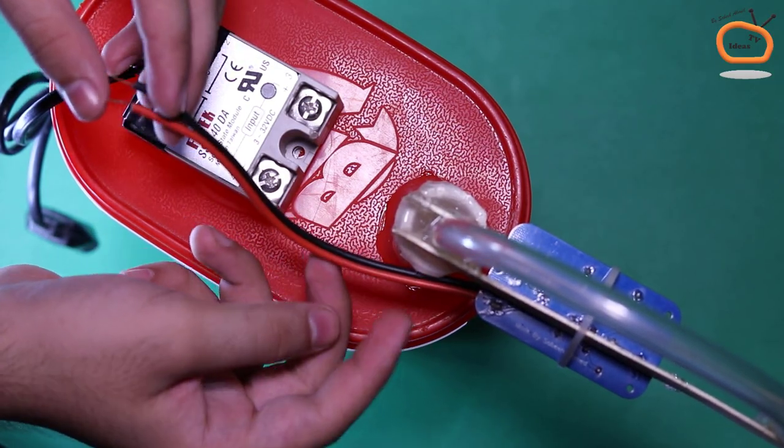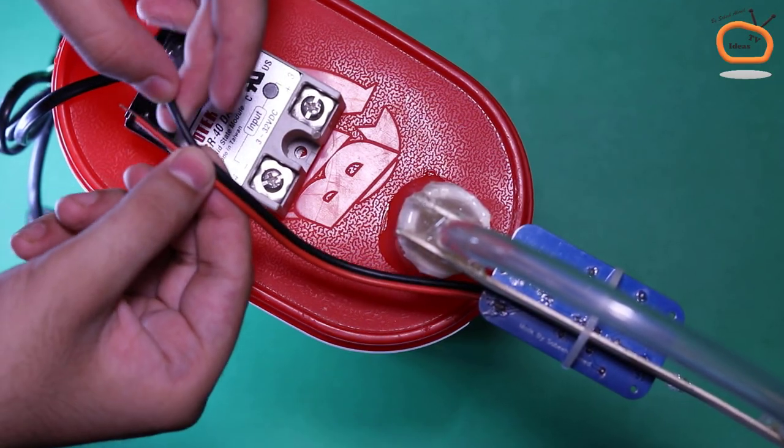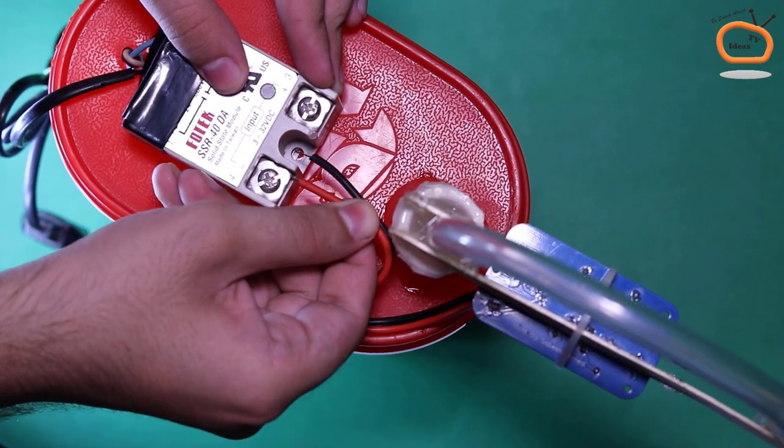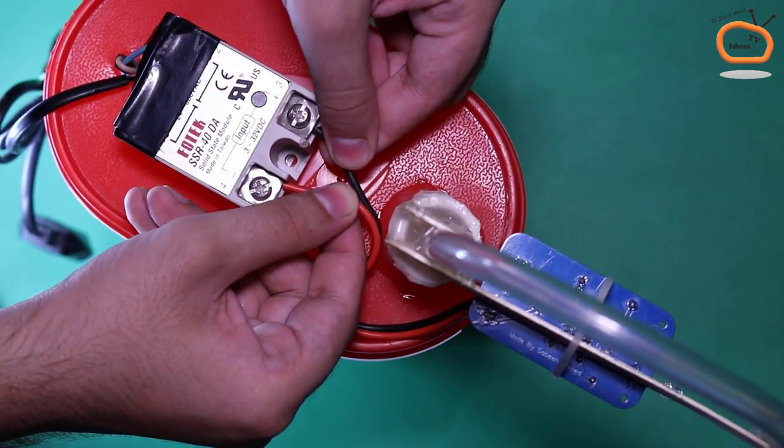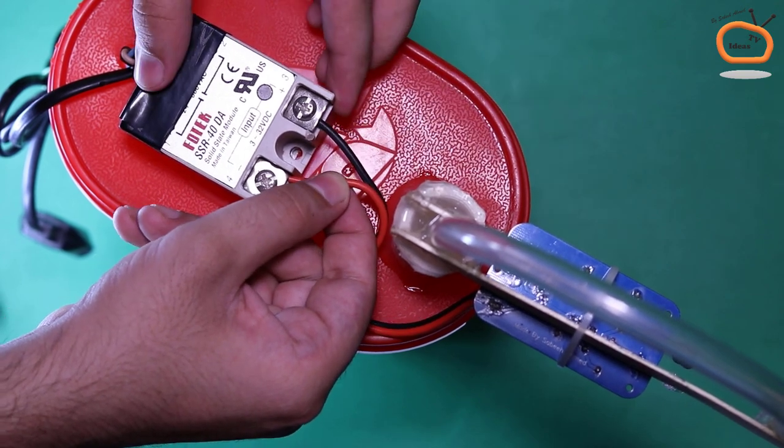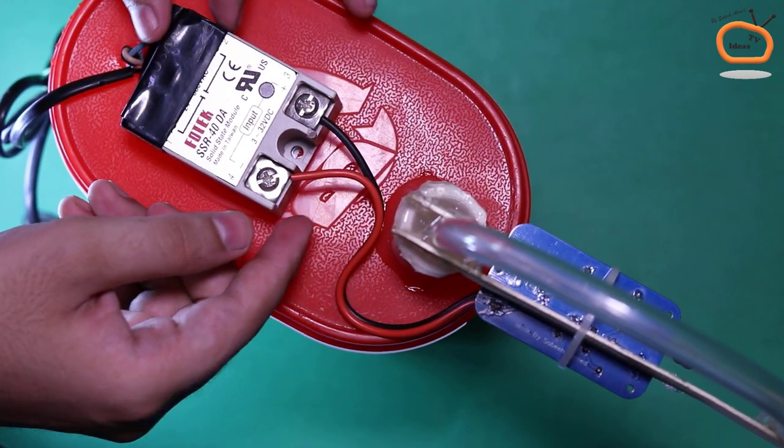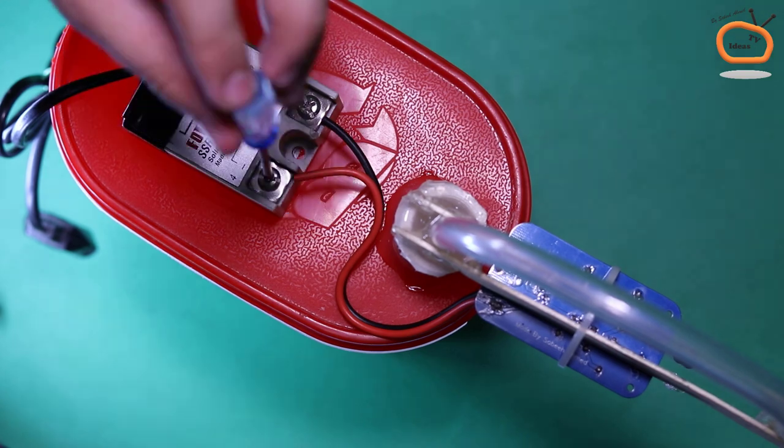And connect these wires from the terminal block to the solid state relay as shown. If you notice, I insulated the pump and power cord side of the solid state relay with insulation tape, because it will contain AC voltage.